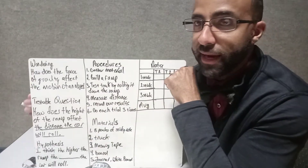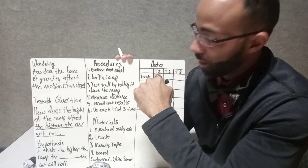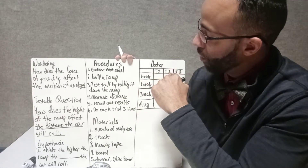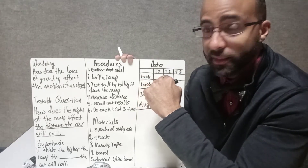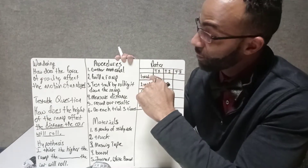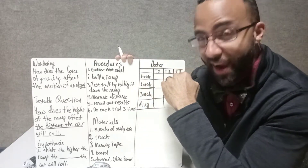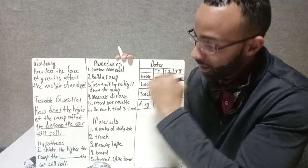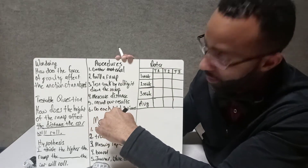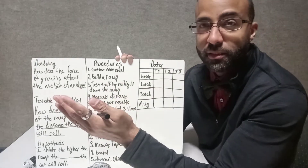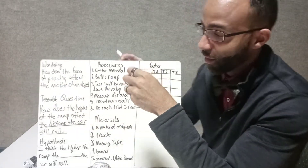We're going to roll the car, measure the distance, and write the results. Then roll it at the same height, measure, and record again. We have to do each trial three times, and then we're going to switch out the height of the ramp. Are you ready? Let's get it going.